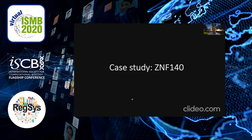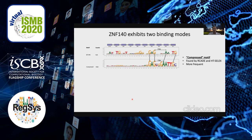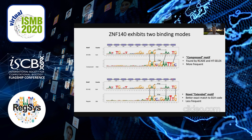The first case study we look at in depth is ZNF140. We found ZNF140 to have two binding modes. The first, which we call the compressed motif, is compressed with respect to the recognition code and was also found by methods like HT-SELEX and Arcade. But we also found a novel motif — the regular motif — because it is not compressed, and this was found in only 10% of the binding sites.